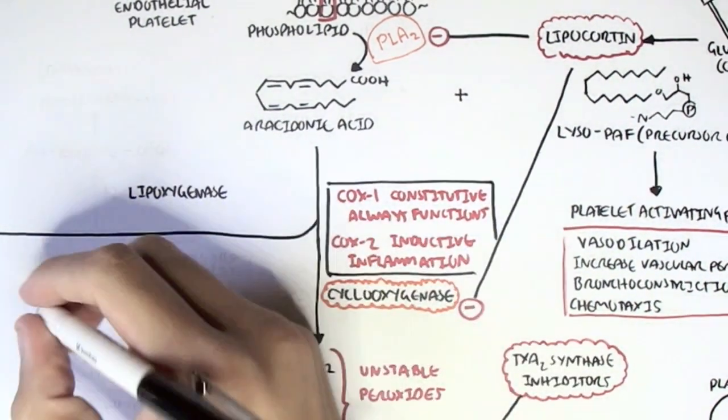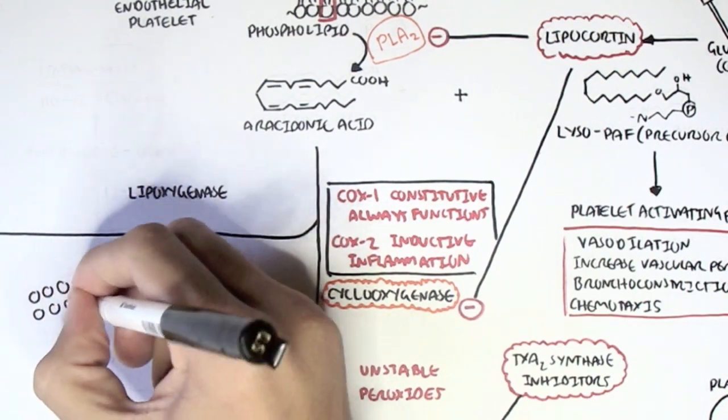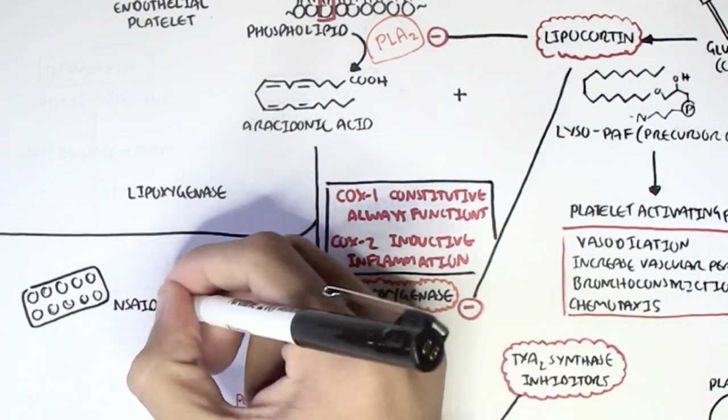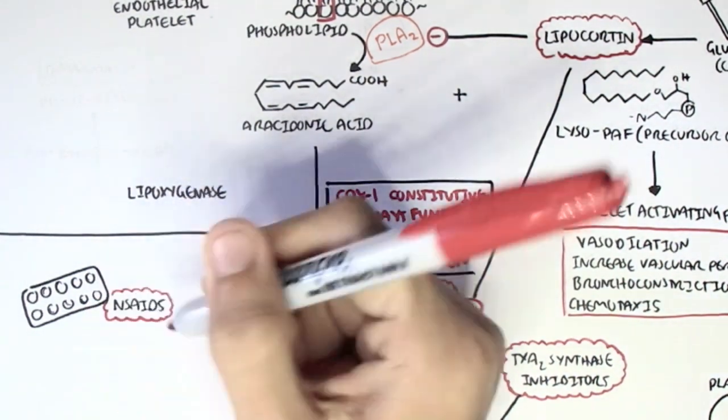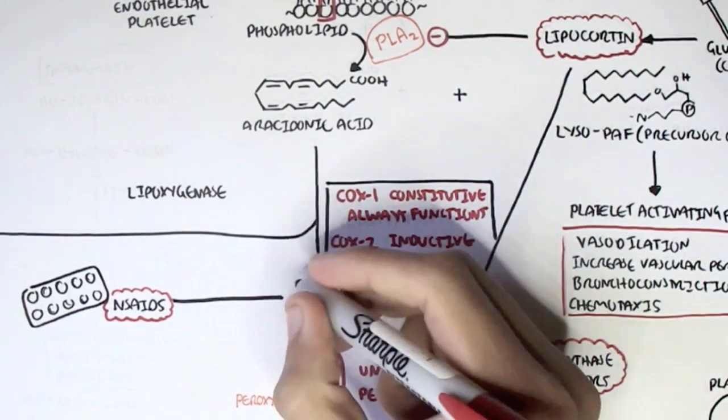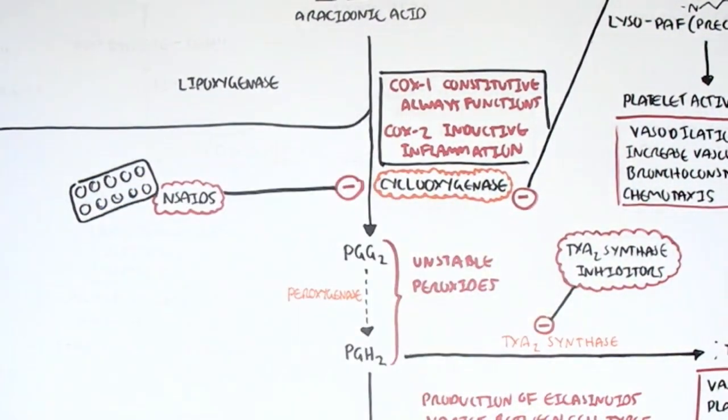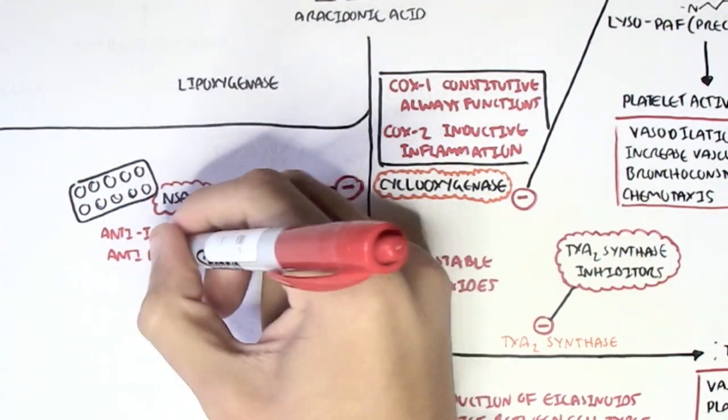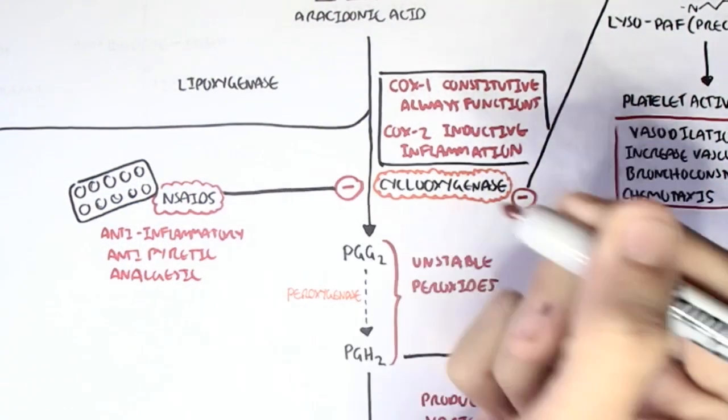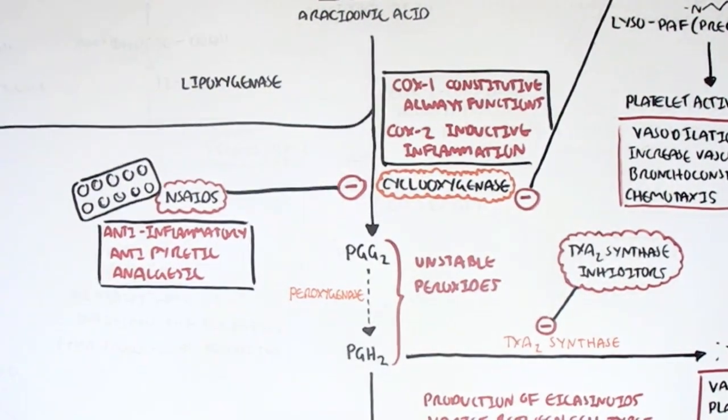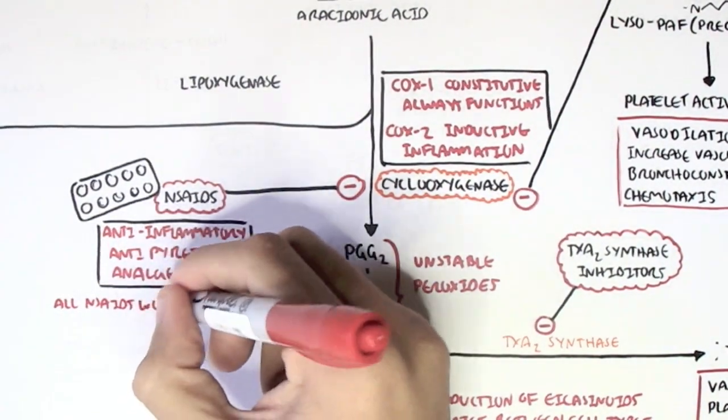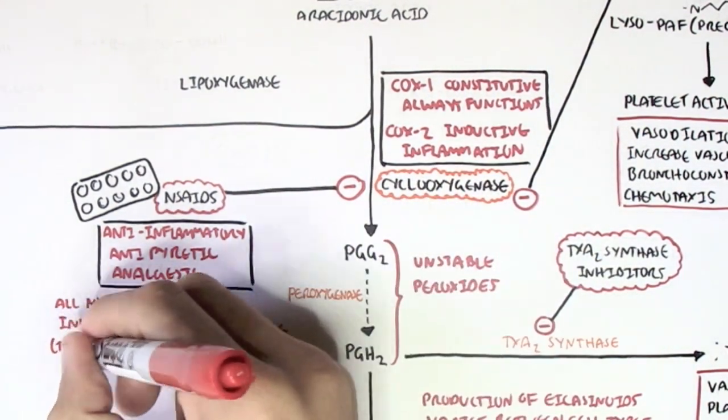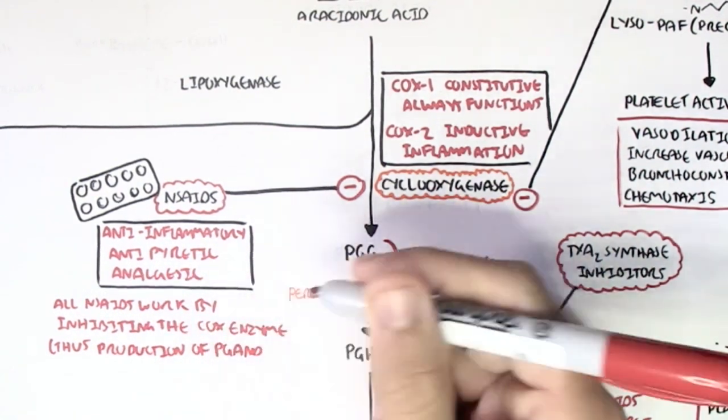Another drug that inhibits the enzyme cyclooxygenase are the NSAIDs, the non-steroidal anti-inflammatory drugs. And these are the most common and many people take it. It's things like ibuprofen as well as aspirin. They have anti-inflammatory, antipyretic and analgesic effects. All NSAIDs work by inhibiting the COX enzyme and thus the production of prostaglandins and thromboxanes A2.